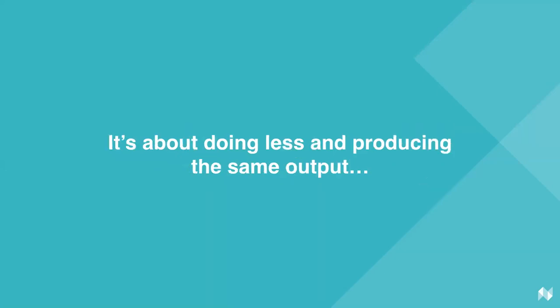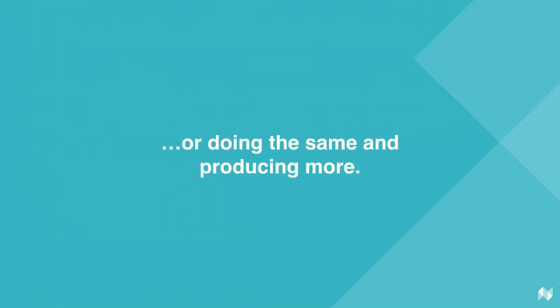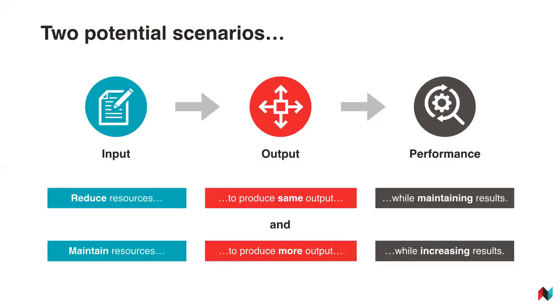Achieving operational efficiency is about either doing less and producing the same output, or doing the same things and being able to achieve more with them. One of those scenarios fundamentally means you should be looking to reduce your resources but produce the same output and maintain results, or you should be looking to maintain your resource input, produce more output, and be able to increase your performance.